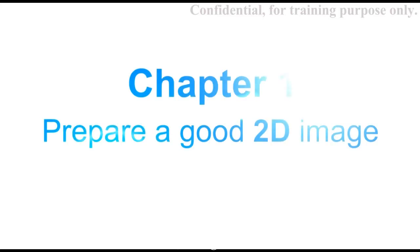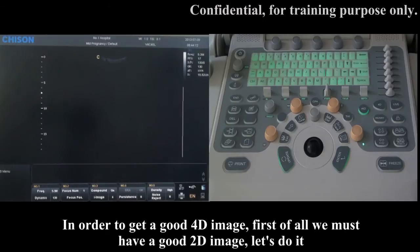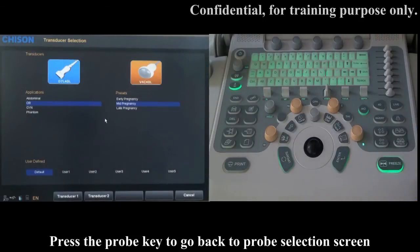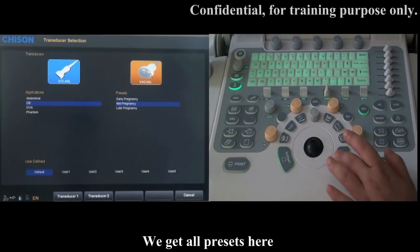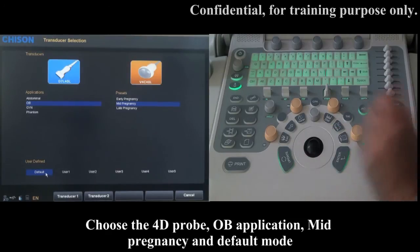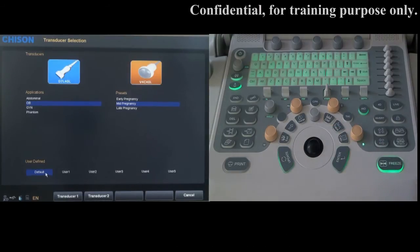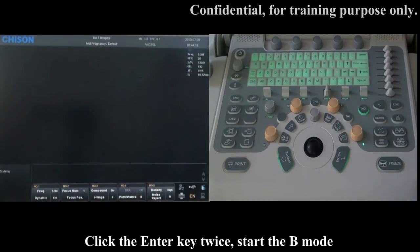Let's get started. In order to get a good 4D image, first of all we must have a good 2D image. Press the probe key to go back to the probe selection screen. We get all the presets here. Choose the 4D probe, OB application, mid-pregnancy, and default mode. Click the entry key twice to start the B mode.